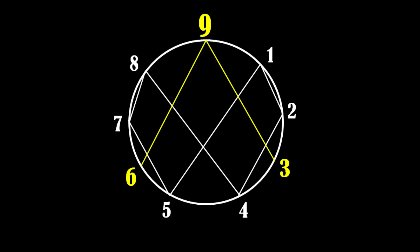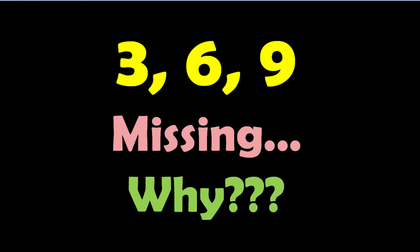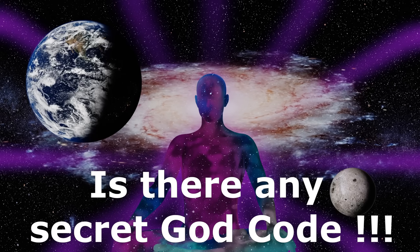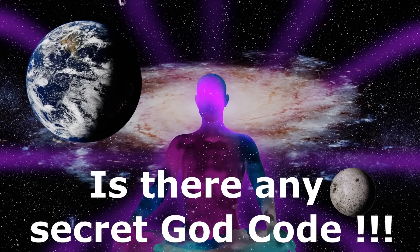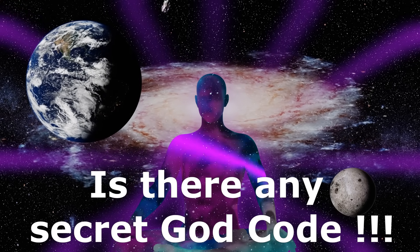And the numbers that are missing in the sequence every time, that is 3, 6 and 9, are shown by yellow color. But what does the absence of numbers 3, 6 and 9 in the sequence mean? Does it point to any secret code of the god or some mystery of the universe?